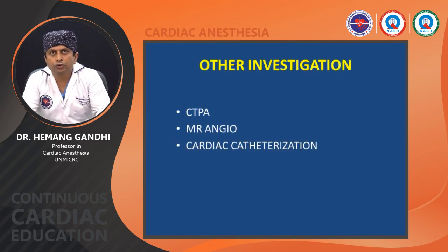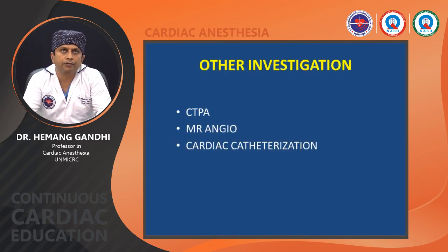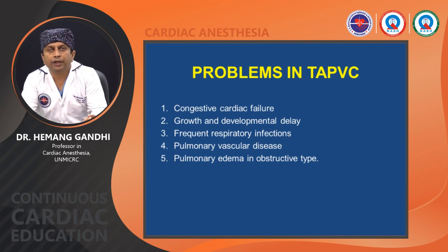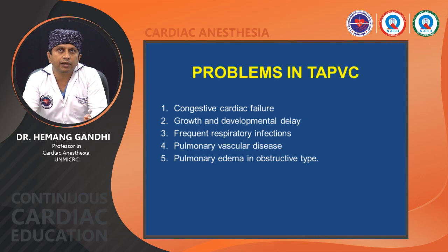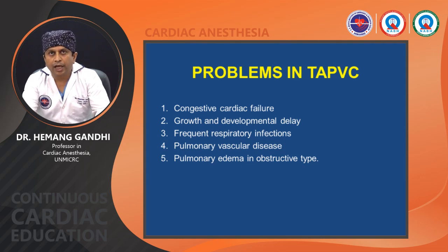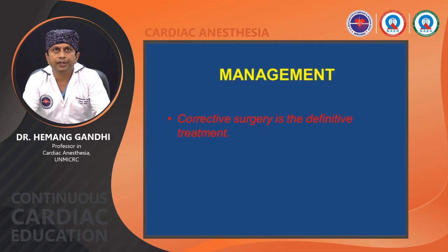CT pulmonary angiography is used for confirmation of echocardiographic findings. After diagnosis, TAPVC patients commonly present with problems including congestive cardiac failure, growth and developmental delay, frequent respiratory infections, pulmonary vascular disease, and pulmonary edema in the obstructive type.